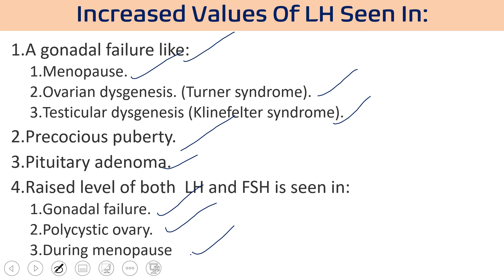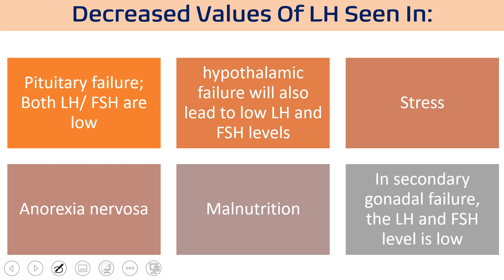Increased LH values are seen in gonadal failure such as menopause, Turner syndrome, Klinefelter syndrome, precocious puberty, or pituitary adenoma. Both FSH and LH levels can increase in conditions of gonadal failure, polycystic ovarian syndromes, or during menopause. After menopause, estrogen levels drop; since estrogen normally regulates calcium, menopausal women experience bone demineralization making bones porous and fragile, leading to more fractures. Decreased LH levels are seen in pituitary failure, hypothalamic failure, stress, anorexia nervosa, malnutrition, or secondary gonadal failures.